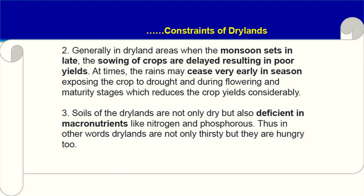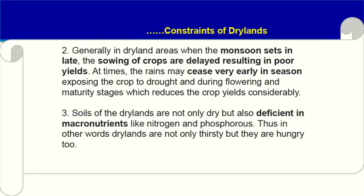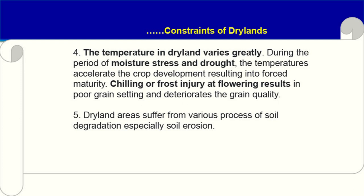Flowering and maturity stages are very critical — there should not be any shortage of moisture at flowering. If shortage occurs, it will affect grain filling and seed setting. Soils of drylands are not only dry but also deficient in macronutrients — there are soil fertility issues, soil erosion, and deficiency of organic matter, nitrogen, phosphorus, and some micronutrients. The temperature in dryland varies greatly; during moisture stress and drought, temperature accelerates crop development, resulting in forced maturity and reduced yields.